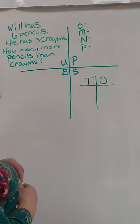All right, so this is called the UPSI model. So we have a U, a P, an S, and an E.